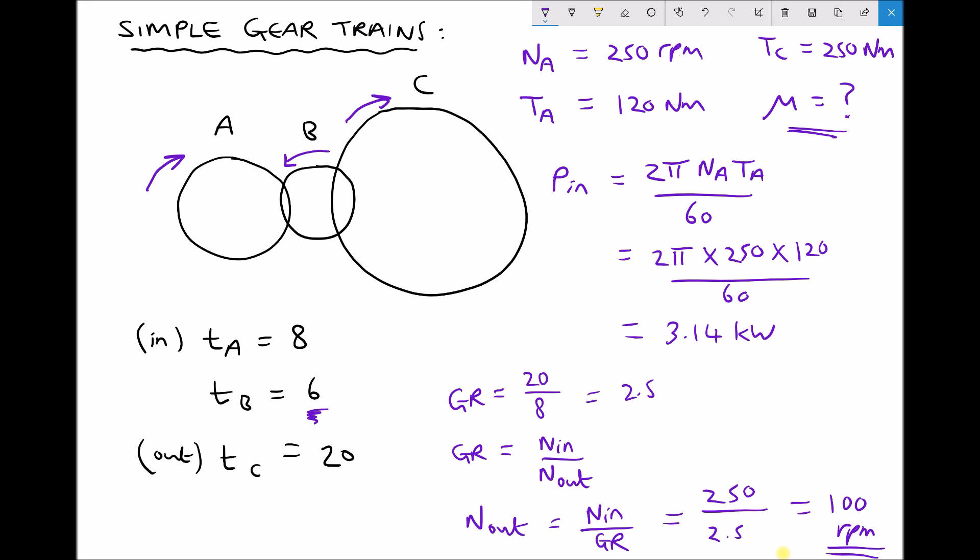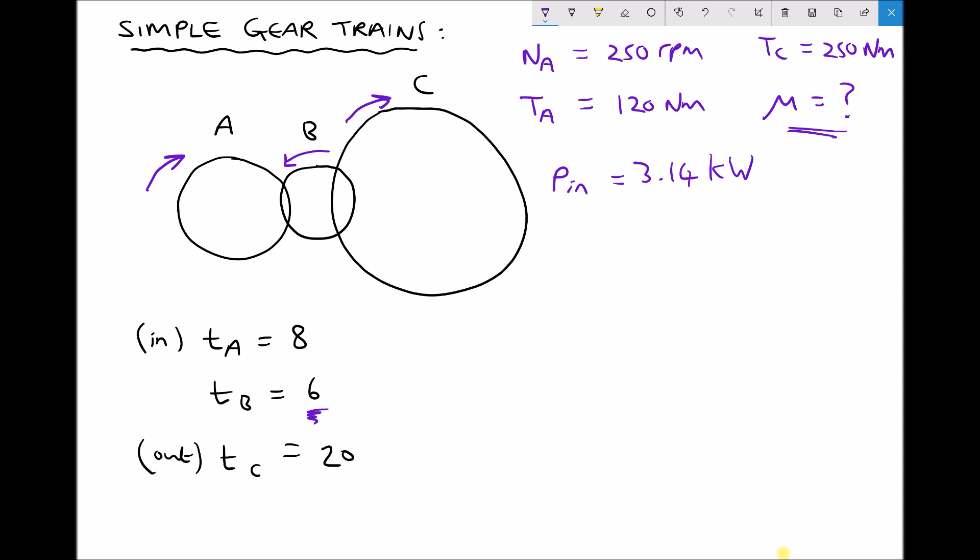So now we can calculate our output power. And when we calculate our output power we're going to expect it to be less than our input power of 3.14 kilowatts.